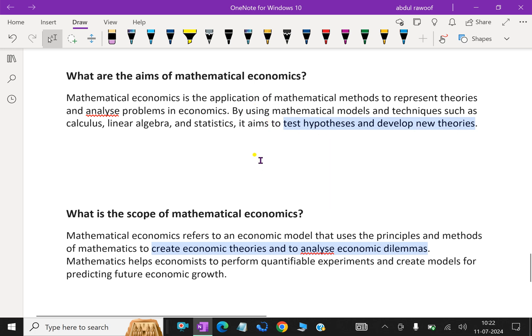What is the scope of mathematical economics? Mathematical economics refers to an economic model that uses the principles and methods of mathematics to create economic theories and to analyze economic dilemmas. Mathematics helps economists to perform quantifiable experiments and create models for predicting future economic growth.